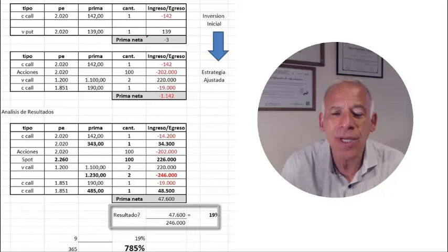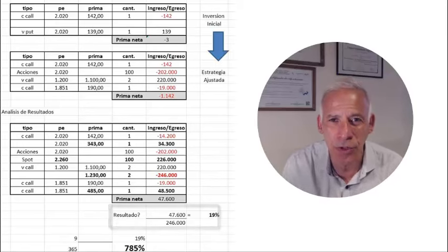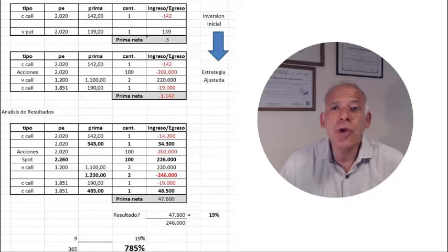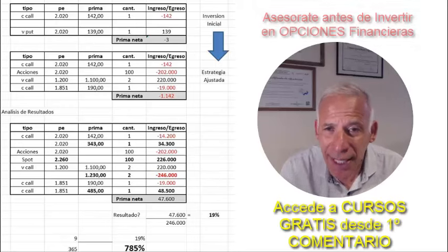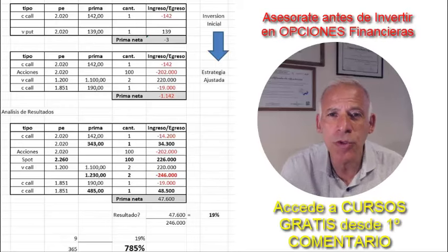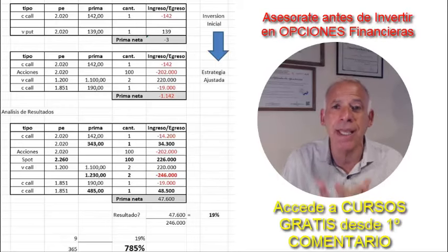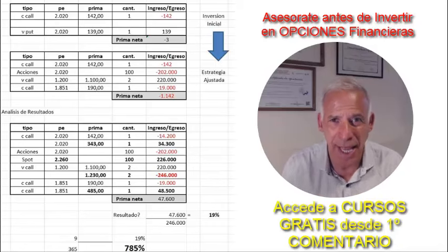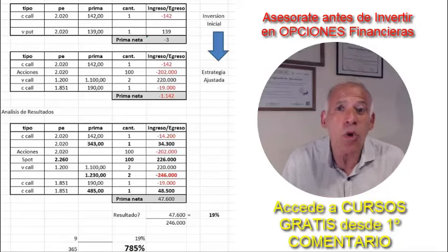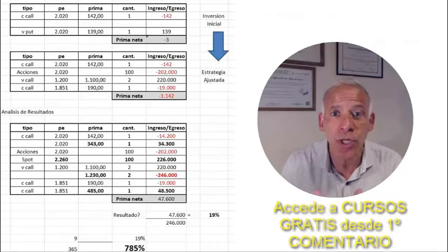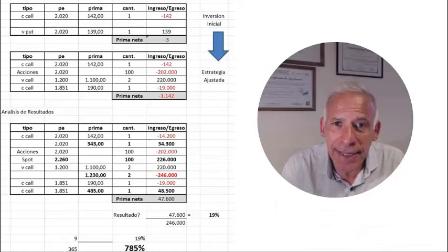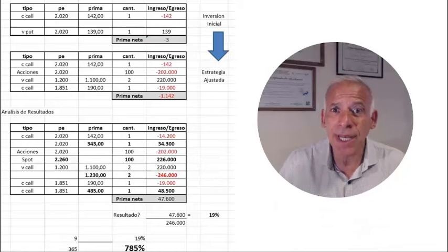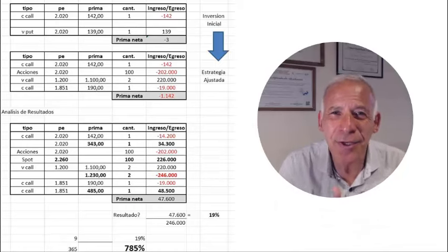which equals a rate of 785% annual. This is according to a correct interpretation of the movement of the price of the underlying asset in the market, analyzing the implicit volatility. Let's review briefly what we have done, and conclude with what we did yesterday, increasing gains with today's rise. Let's start!